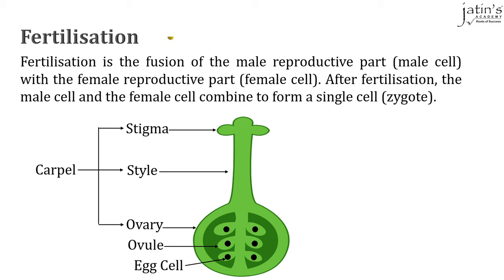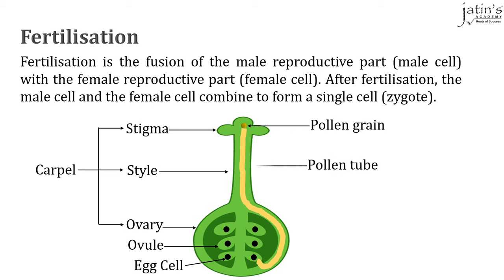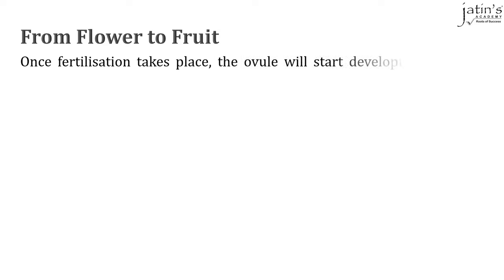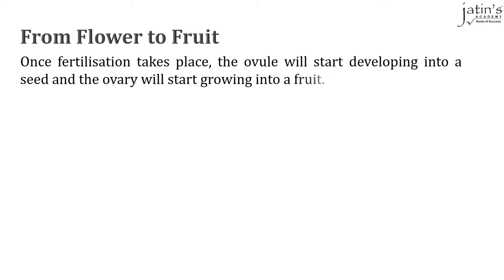When a pollen grain lands on the stigma of a flower, it starts developing a pollen tube inside the style all the way to the ovary. Once it reaches the ovary, the pollen grain travels through this tube, breaks open, and fuses with the egg cell to combine and form a zygote. Once the zygote is formed, the flower will slowly start turning into a fruit. The ovule will start developing into a seed and the ovary will start growing into a fruit.